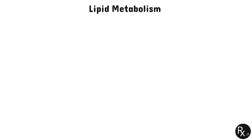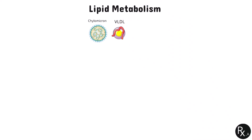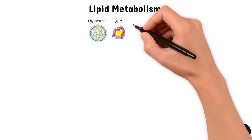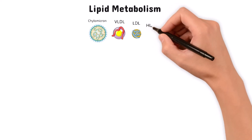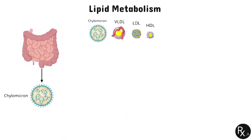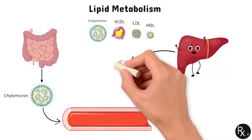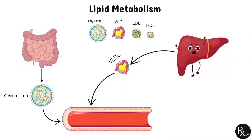There are four main forms of lipoproteins: chylomicrons, very low-density lipoprotein or VLDL, low-density lipoprotein or LDL, and high-density lipoprotein or HDL. Chylomicrons are produced from dietary lipids in the gut and primarily consist of triglycerides with a small amount of cholesterol. The liver produces VLDLs, which are mainly made up of triglycerides and a small quantity of cholesterol compared to chylomicrons.